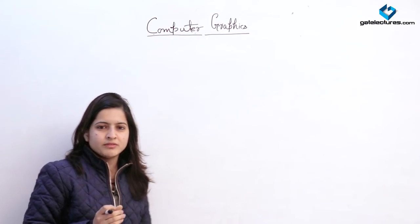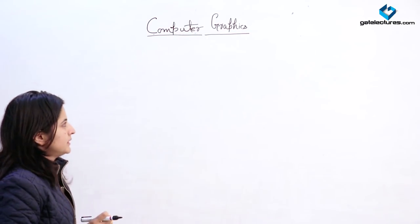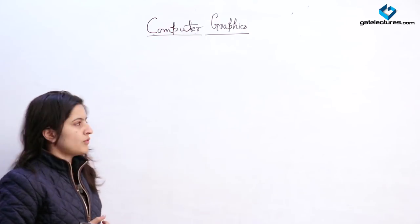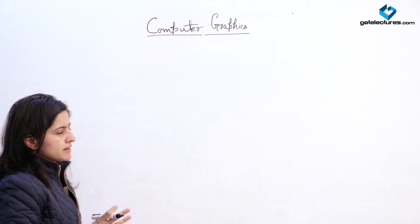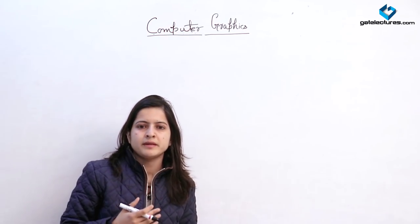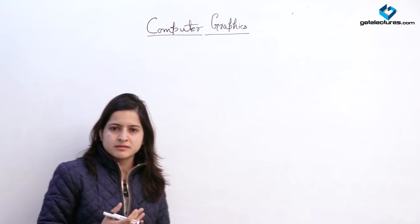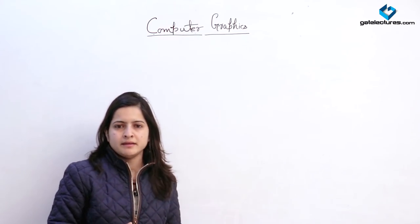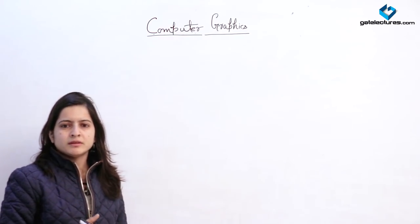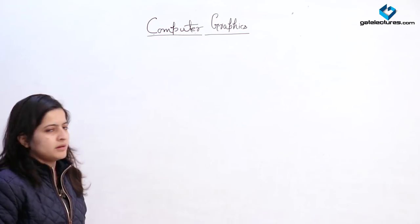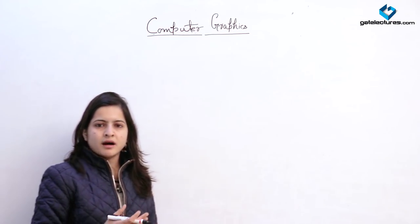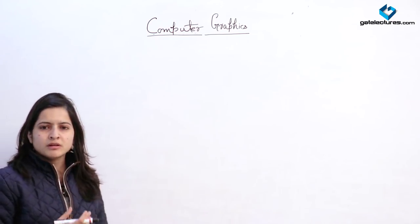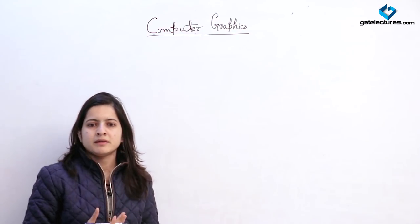Good morning friends. Today we are seeing some algorithms for the generation of objects. As we know in computer graphics we are displaying some objects on the screen. These objects can be a circle, it can be a line, it can be a polygon or various types of curves. Today we will see how these lines or curves will be generated or will appear on the screen.